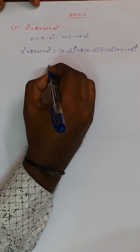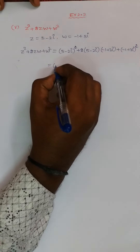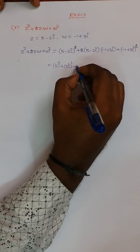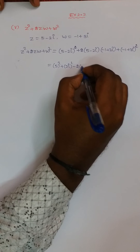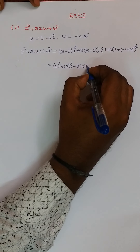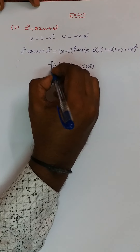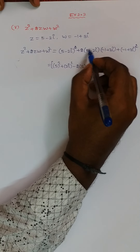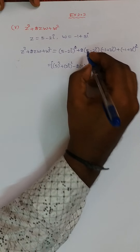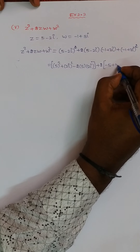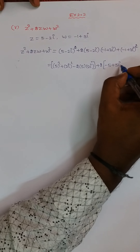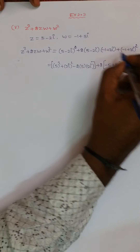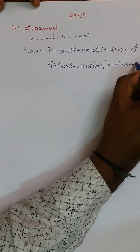The first term is in the form of (A minus B)², so A² = 5² = 25, plus B² = (2i)², minus 2AB = 2 into 5 into 2i. For the second term, 2 into: 5 into minus 1 = minus 5, 5 into 3i = plus 15i, and 2 into minus 1 = minus 2, minus 2i into 3i = minus 6i².